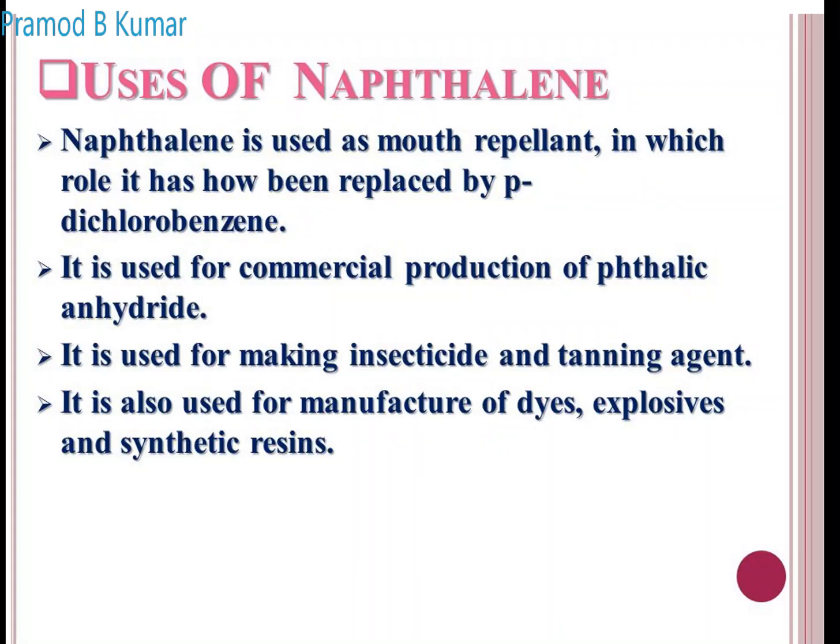Uses of naphthalene: it is used in mothballs as a moth repellent, where it is now being replaced by dichlorobenzene. It is used for commercial production of phthalic anhydride and phthalic acid. It is used in making insecticides and tanning agents. It is also used in the manufacture of dyes, explosives, and synthetic resins.